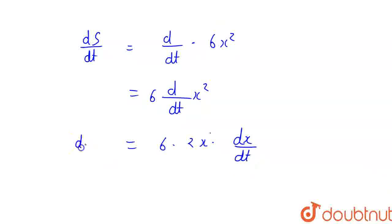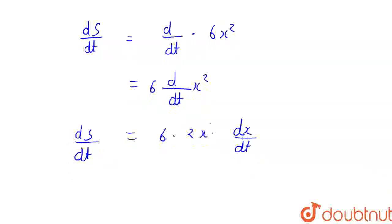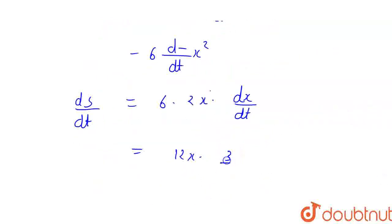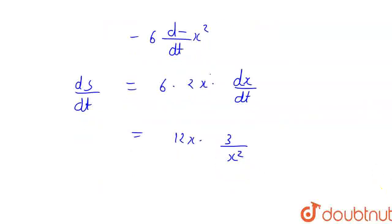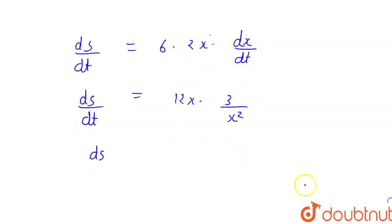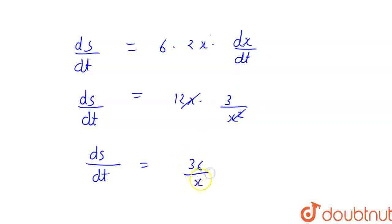So dS/dt = 12x · dx/dt. We already found dx/dt = 3/x², so putting that in: dS/dt = 12x · (3/x²). Solving this, x cancels and we get dS/dt = 36/x.